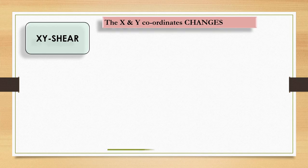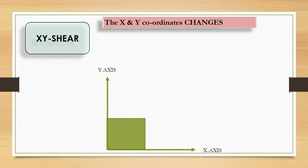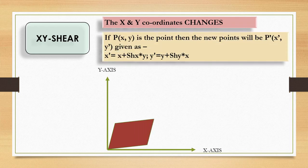We can also perform shearing along both X and Y axes simultaneously, changing the coordinates of both axes. In the XY plane, when we change coordinate values in both directions, the object transforms accordingly. If P(x, y) is the original point, the new point P'(x', y') is given as: x' = x + Sh_x × y, and y' = y + Sh_y × x. So for X shear, multiply the shear factor by the Y coordinate value, and for Y shear, multiply the shear factor by the X coordinate value.